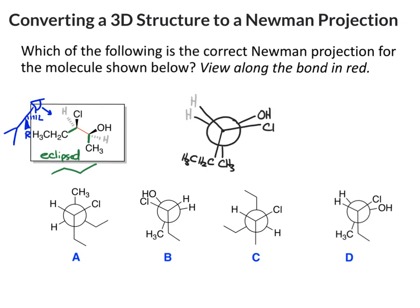So now let's look. We can go ahead and cross out A and C because those are staggered. B and D are both eclipsed. And we find the one that matches. We have the hydrogens on the left. We have the Cl and the OH. We have the ethyl and the methyl.